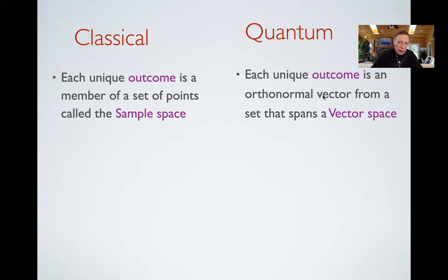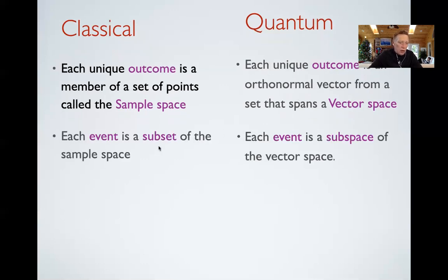In classical theory, an event — like the person gives a rating greater than four, so five, six, or seven — is a subset of the sample space. That event contains three points. So the idea of classical probability theory is we have events described as subsets. When you adopt subsets as the mathematical representation of an event, you're buying into a logic — the logic of subsets — which is the same thing as Boolean logic. Boolean logic has axioms like associativity, distributivity, and commutativity. These are all strong axioms of Boolean algebra.